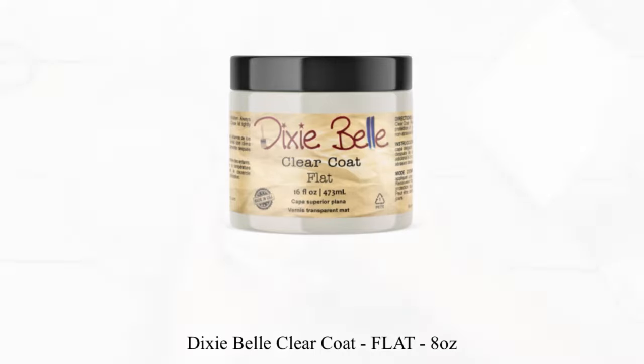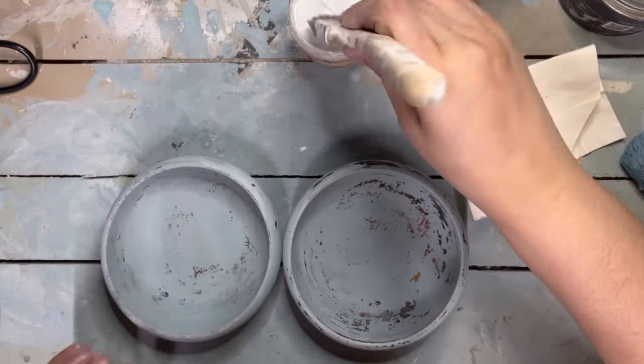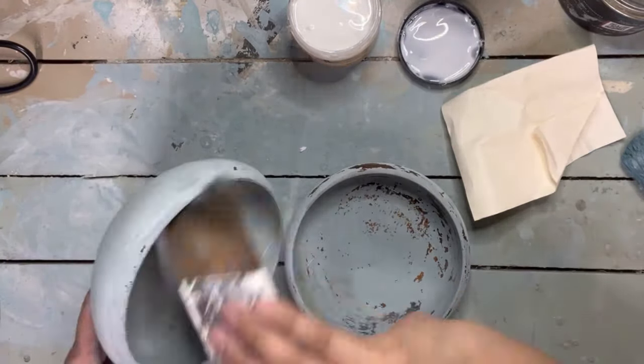Here is a clear coat by Dixie Bell in a flat finish. I'm going to seal both of these bowls up inside, outside, and all around. So these will be for decorative use only. I am not making these to use or to eat out of, it's just decorative.